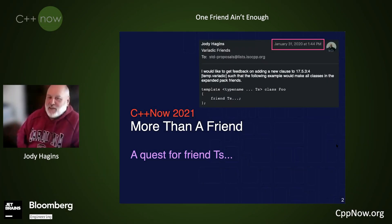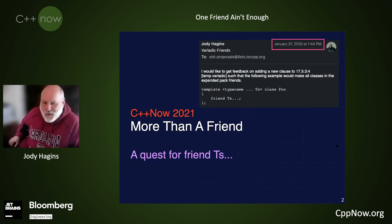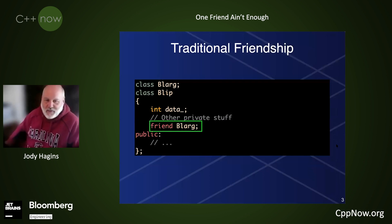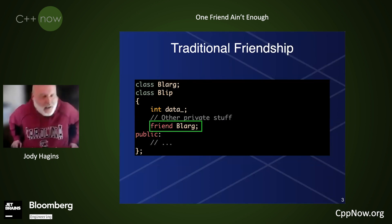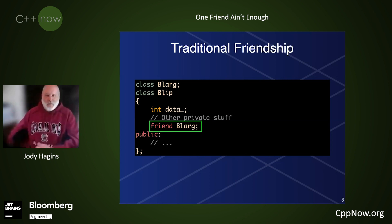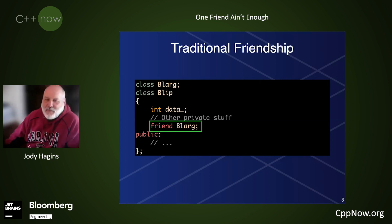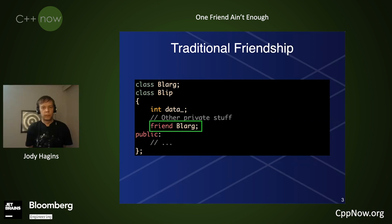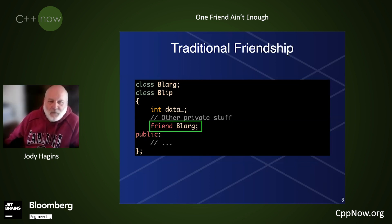This talk references an email that I sent to the std-proposals mailing list back in January of 2020. First, some use cases. A traditional friendship: when Blarg is a friend of the class Blip, it's a friend of everything. This kind of friendship is probably overkill for most situations, but it does grant Blarg complete access to all the internals of Blip.